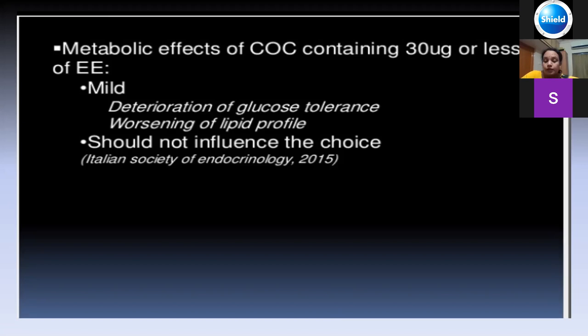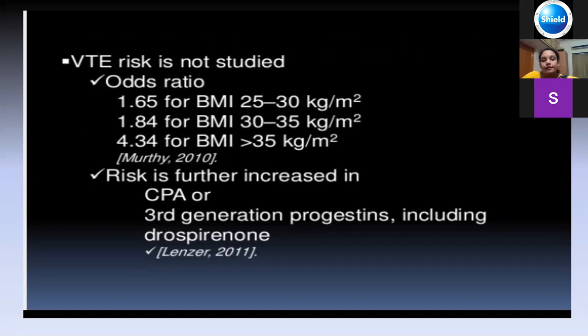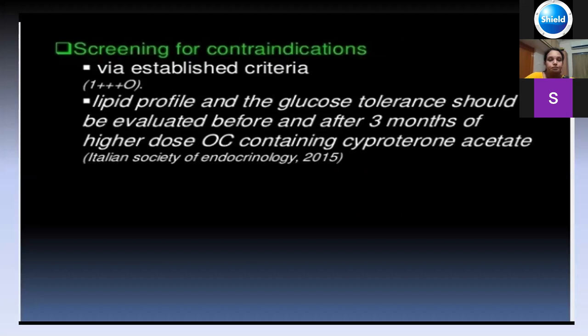Side effects of OC pills include mild deterioration of glucose tolerance — so in hyperinsulinemic cases, add metformin with OC pills — and worsening of lipid profile. Venous thromboembolism risk is high in cases with BMI greater than 35, so avoid OC pills in those cases and use metformin, or use progesterone for withdrawal, or a third-generation progestogen such as drospirenone. Screen lipid profile and glucose tolerance before and after 3 months of starting OC pills. For BMI greater than 40, do not start OC pills.